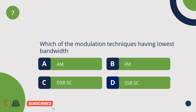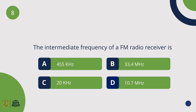Which of the modulation techniques has the lowest bandwidth? The intermediate frequency of an FM radio receiver is 10.7 MHz.